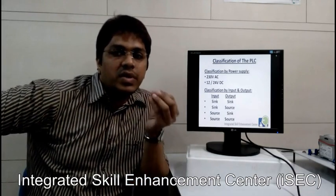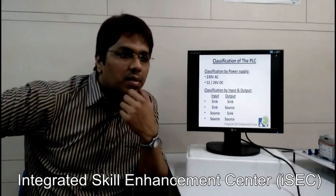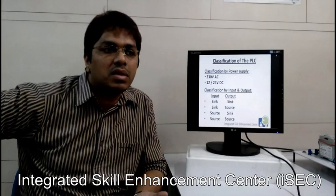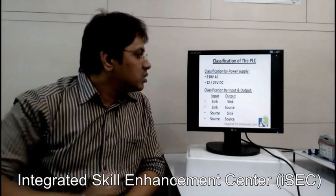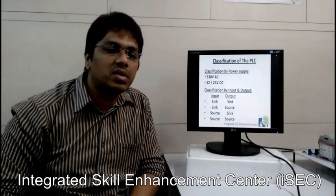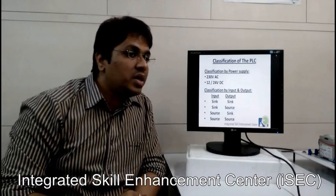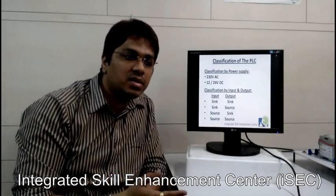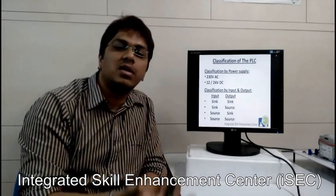Now, classification of the PLC. When you go to the market to buy a PLC, there are different kinds available. It can be classified by power supply: AC power supply PLCs such as 230V AC, or DC power supply PLCs such as 12V or 24V DC. It can also be classified by input and output type: sinking input/sinking output, sinking input/sourcing output, sourcing input/sinking output, or sourcing input/sourcing output.